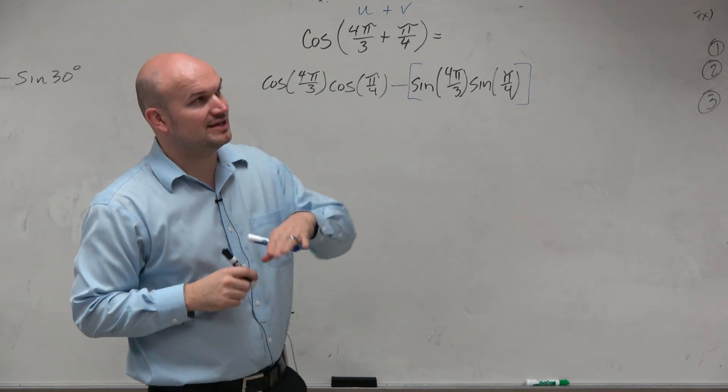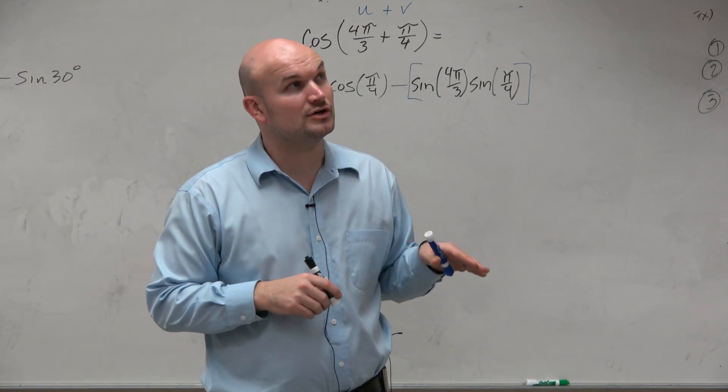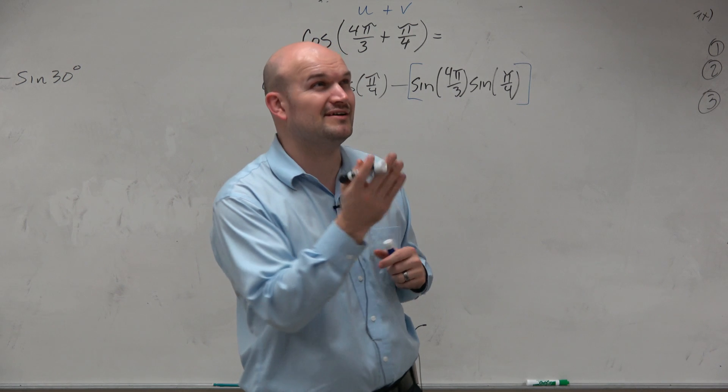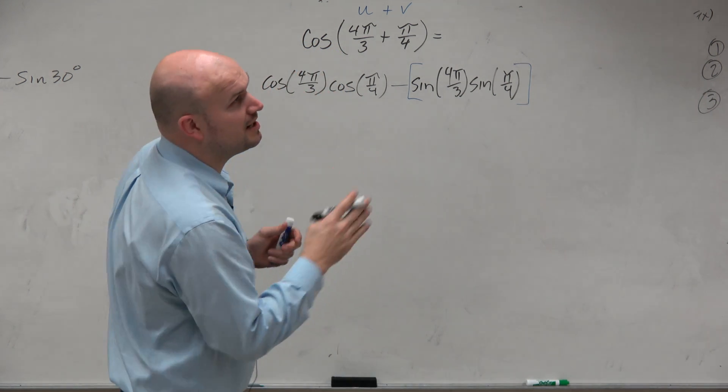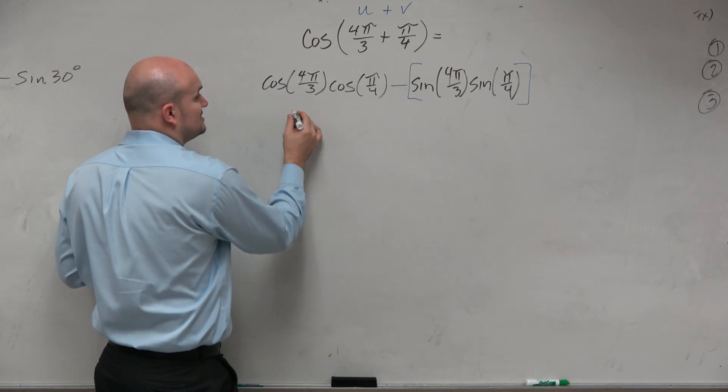So cosine of 4π/3, if we think about that, cosine of 4π/3 is in the third quadrant. That means cosine is going to be negative. π/3, cosine is 1/2, so therefore, this is negative 1/2.